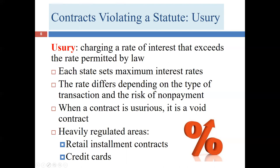So what happens if a contract is held to be usurious? Generally, the contract is going to be held to be void. But what a court actually does can really vary. Let's say it's a commercial loan — the rule is generally it cannot be more than 18% annually, though the loan may float with inflation to 24%.